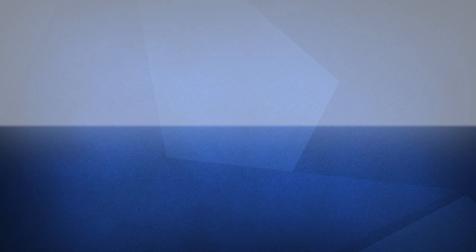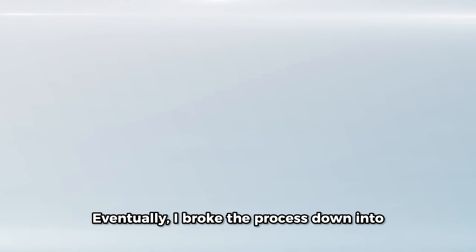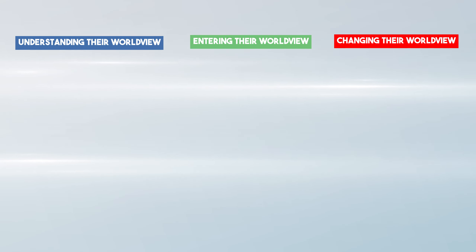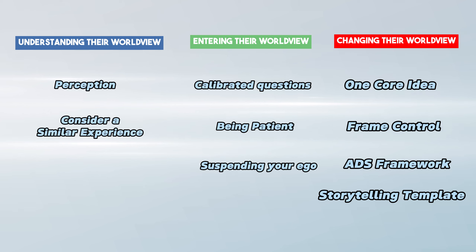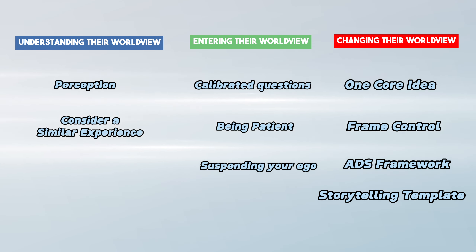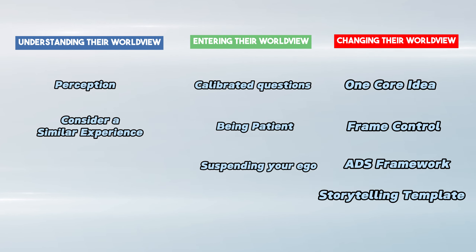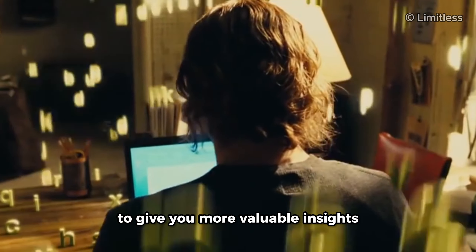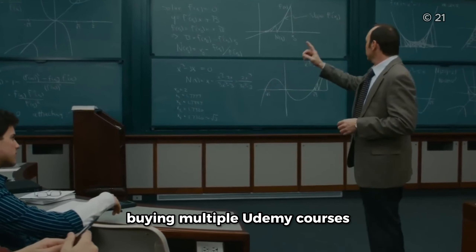So I started with: what are the fundamental parts of persuasion? Eventually I broke the process down into three core steps: understanding their worldview, entering their worldview, and changing a part of their worldview. Then I looked for the best strategies we can use in each step. These lessons are universal — you can apply them in daily interactions, marketing, or selling. But here I focus on daily interactions because there's less information about that.